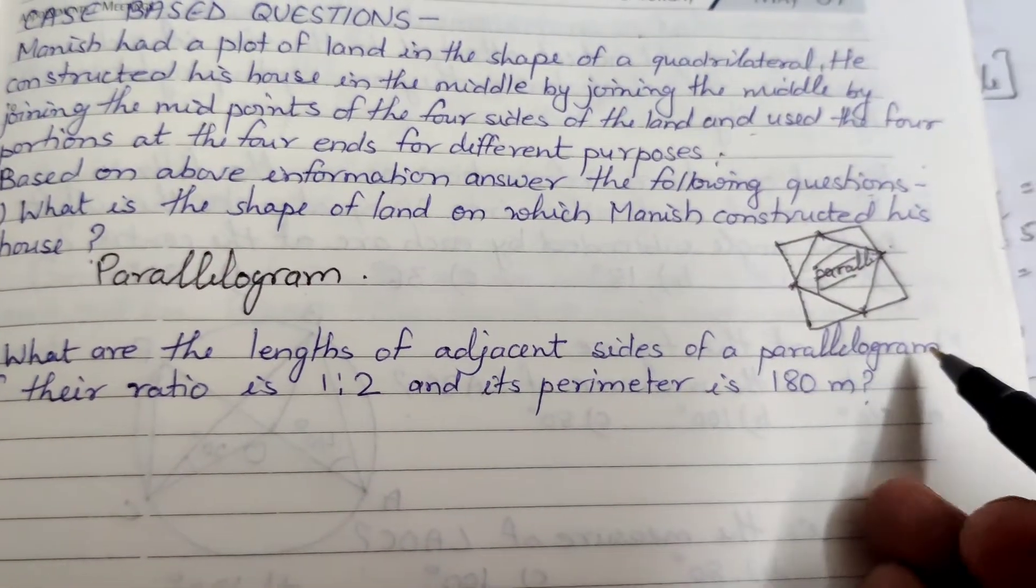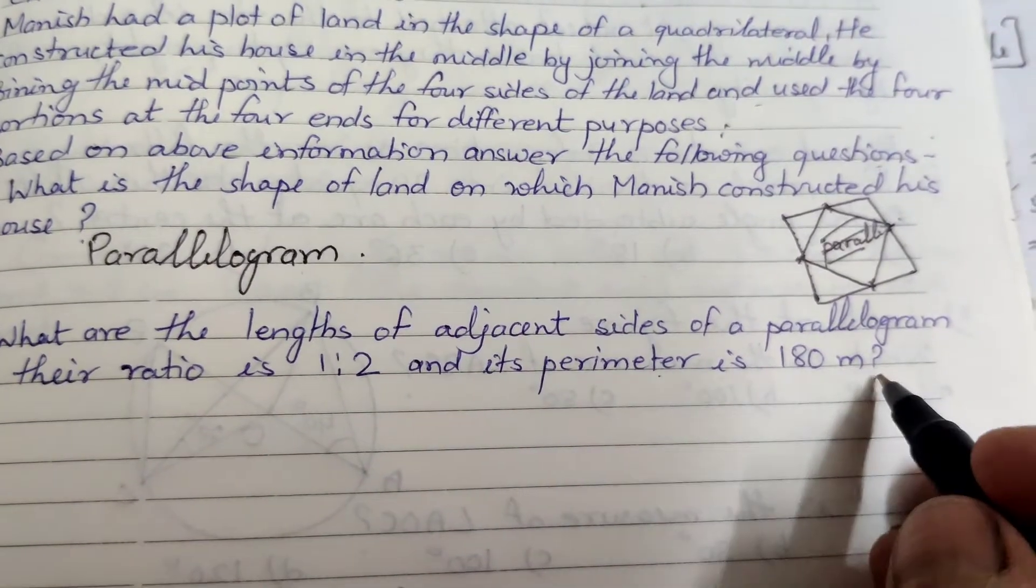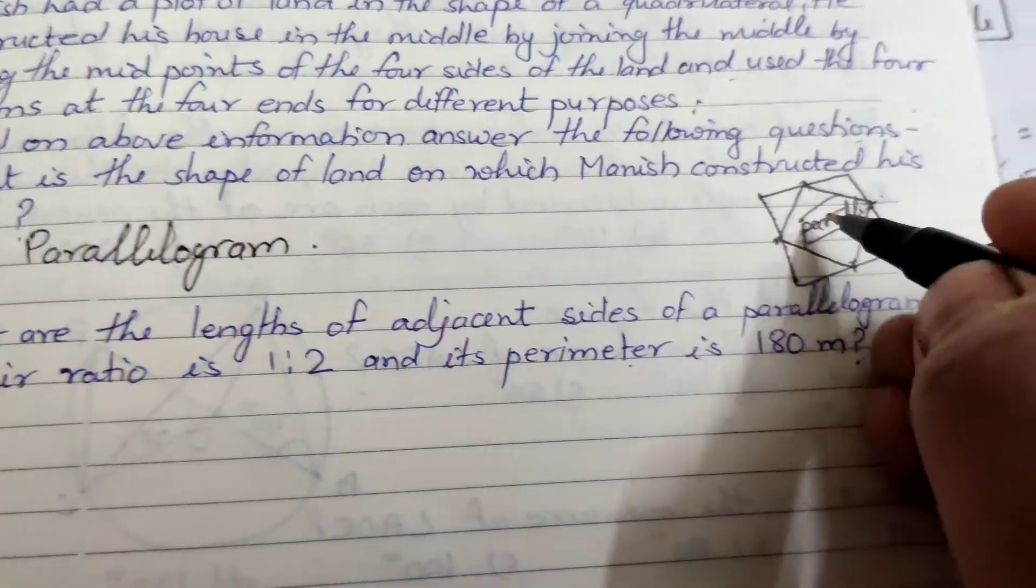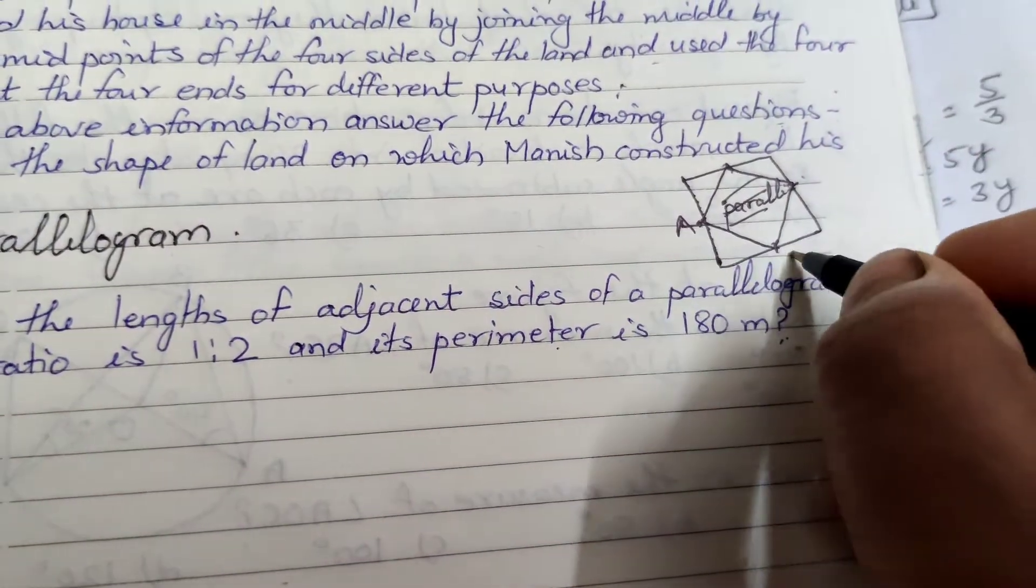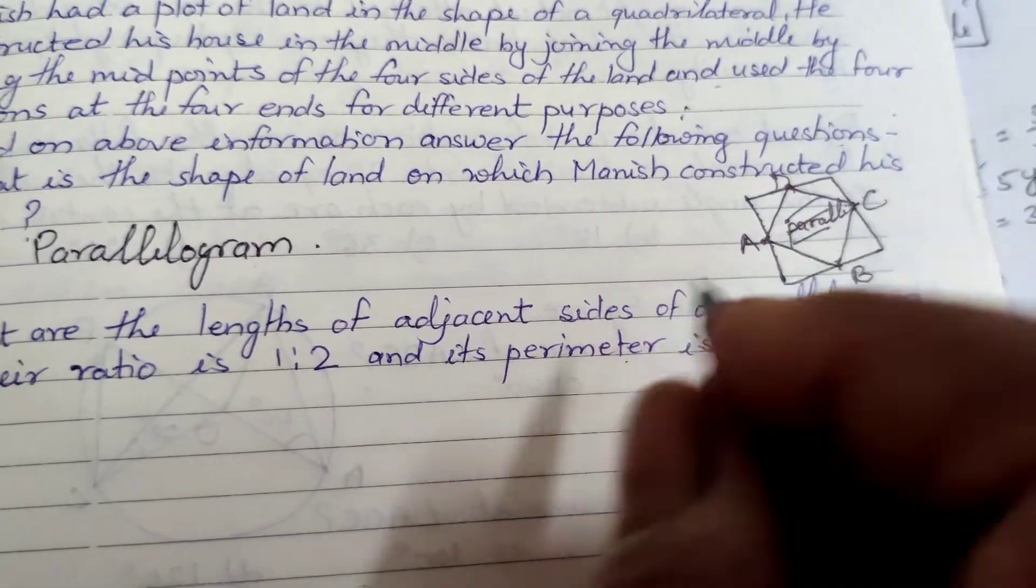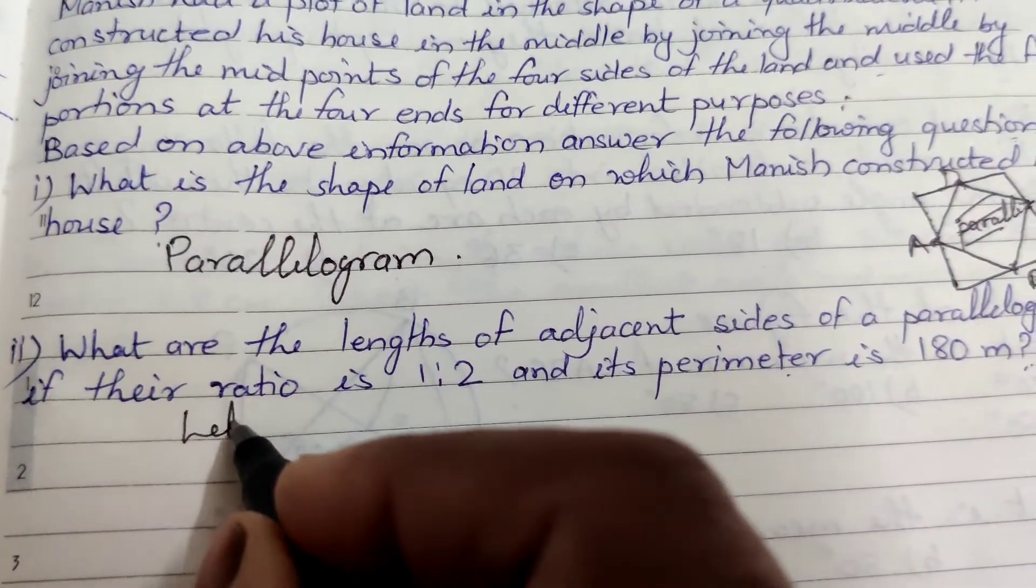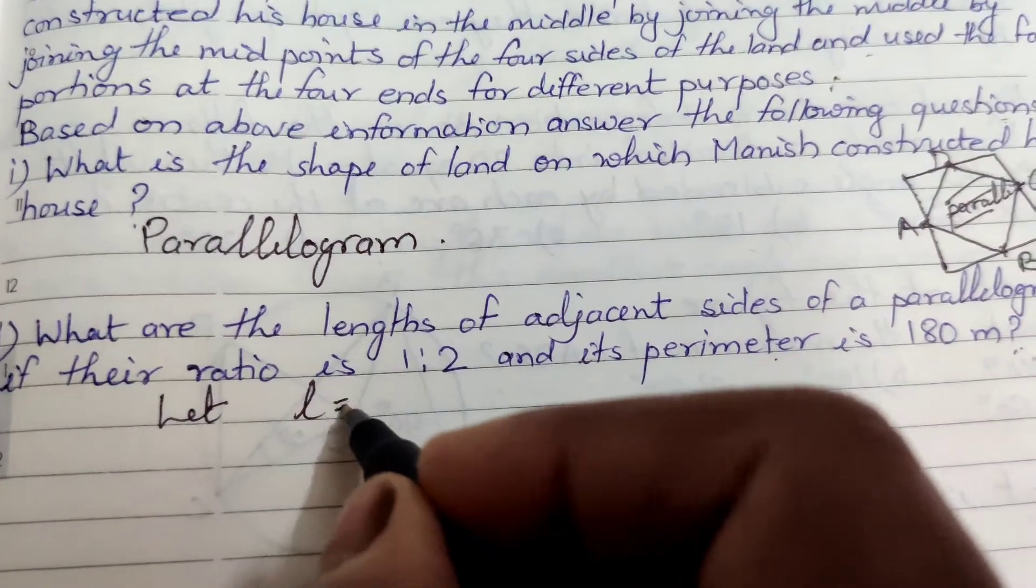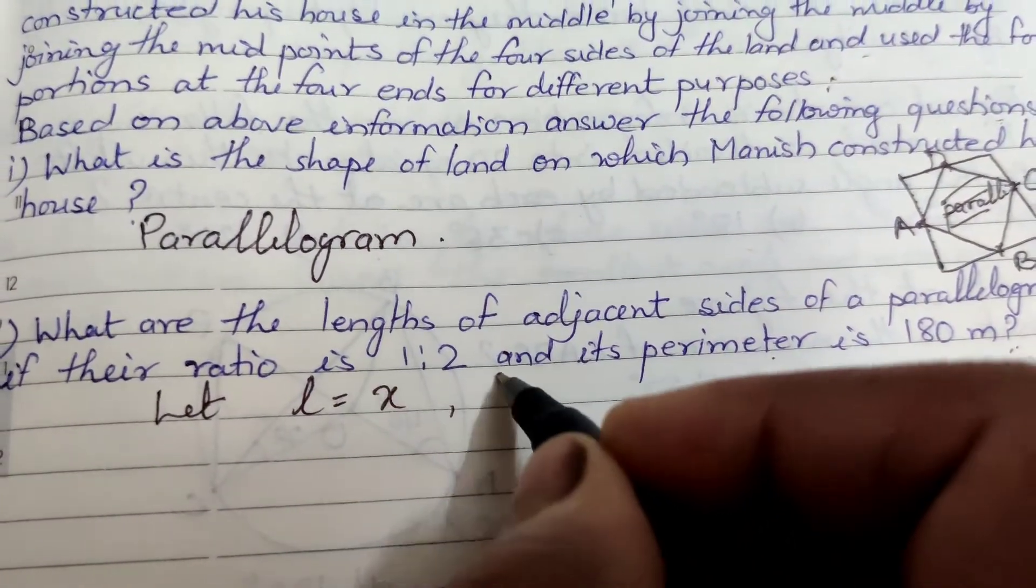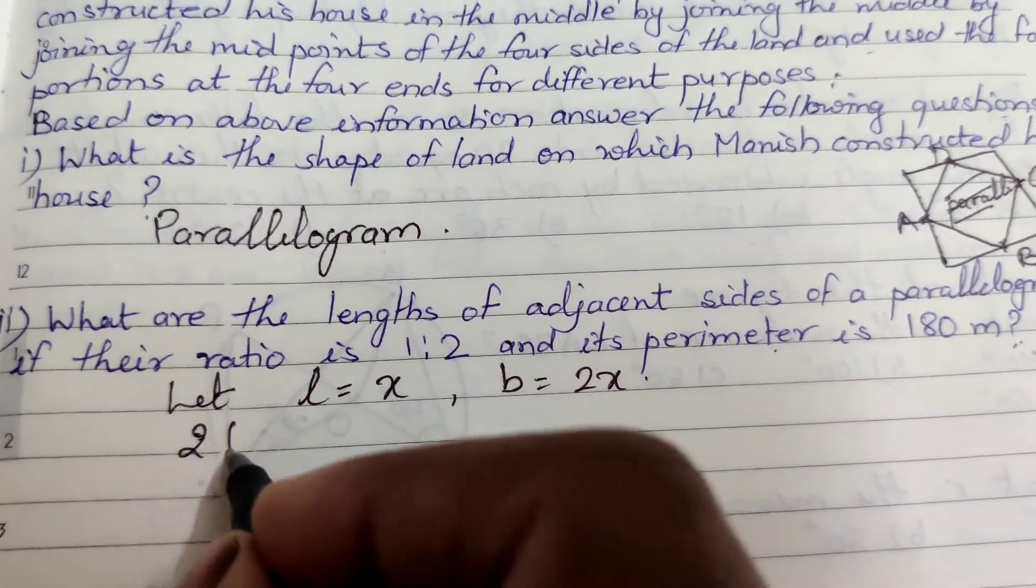Next, what are the lengths of the adjacent sides of a parallelogram if their ratio is 1:2 and the perimeter is 180 meters? The sides, suppose it is ABCD. If the ratio is 1:2, then one side is x and the other is 2x. The perimeter is 180.